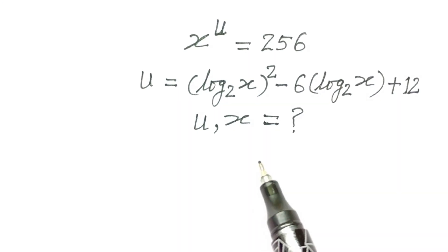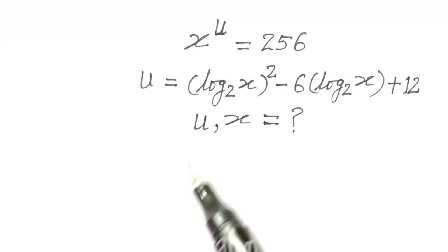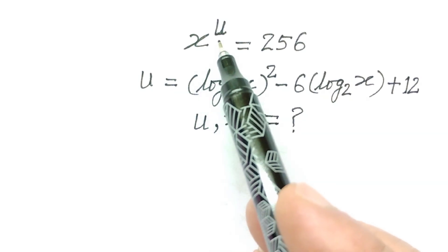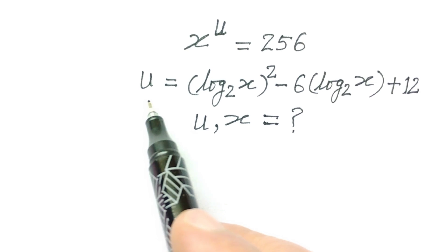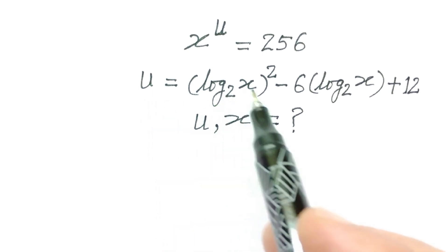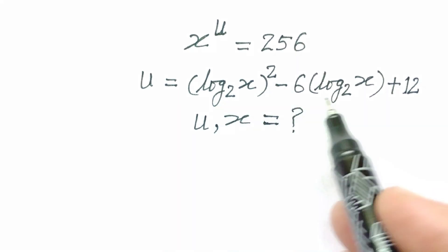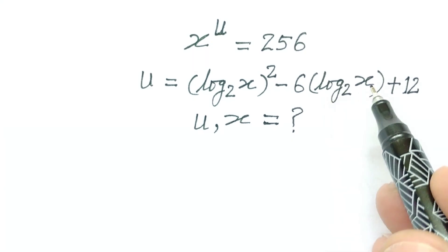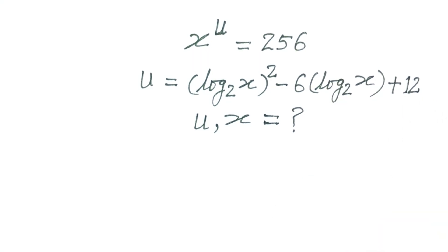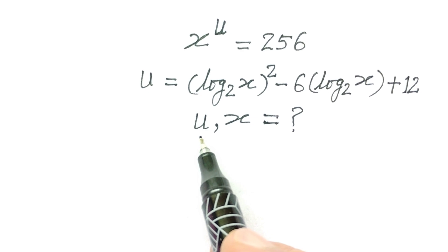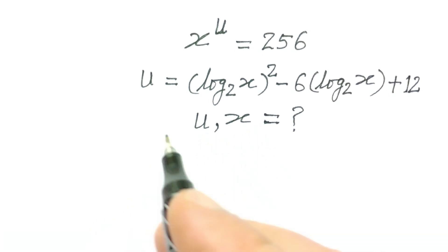Hi friends, welcome to my channel. Today we have a nice problem: we are given x to the power u is equal to 256, and u is equal to log of x base 2, whole square, minus 6 into log of x base 2, plus 12. So we have to find out the value of u and x. Let's start.